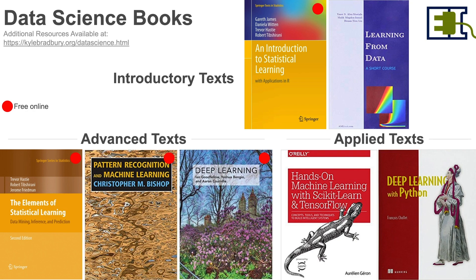There are also a number of books available, some of which are even free. An Introduction to Statistical Learning and Learning from Data are two great texts. If you're going to start in one place, I would recommend An Introduction to Statistical Learning — that'll build up the foundations for both regression and classification, and talk through some of the basics of evaluating performance of machine learning methods. So it's a great starting point.